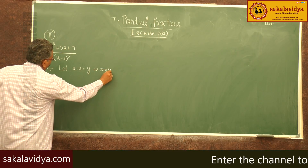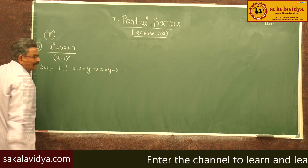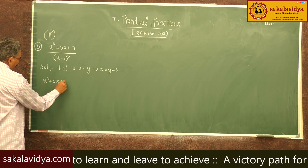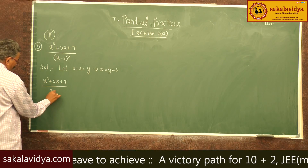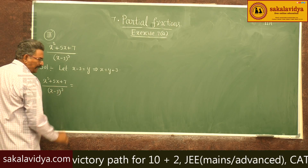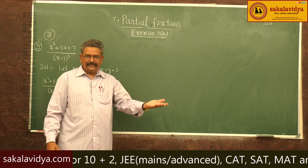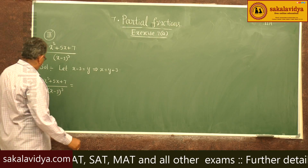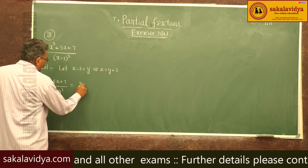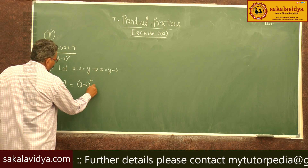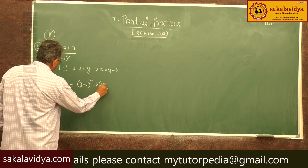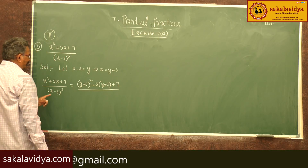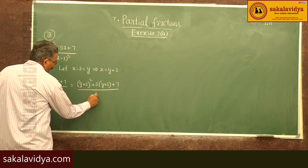So x equals y plus 3. Now this expression x squared plus 5x plus 7 over (x minus 3) cubed can be expressed in terms of y by replacing x with y plus 3. We get (y plus 3) squared plus 5 times (y plus 3) plus 7, all divided by y cubed.